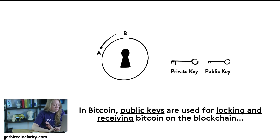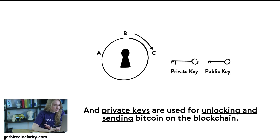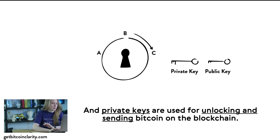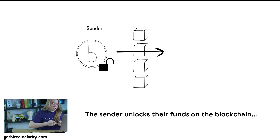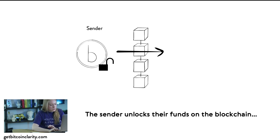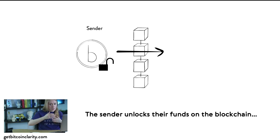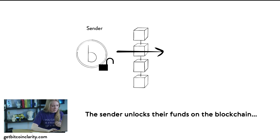In Bitcoin, public keys are used for locking and receiving Bitcoin on the blockchain, and private keys are used for unlocking and sending Bitcoin on the blockchain. In a transaction, the sender unlocks their funds using their private key — so if I'm sending to you, I unlock my Bitcoin using my private key.